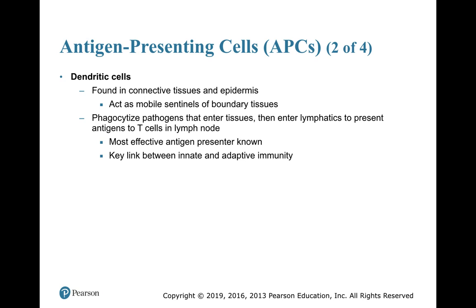Dendritic cells are found in connective tissues and epidermis. They are kind of mobile sentinels of boundary tissues — places where we interact with the outside world. They phagocytize pathogens that enter the tissues, and then they get into the lymphatics and present those to T cells in the lymph nodes. They are the best of the antigen-presenters that we know. They are a key link between innate and adaptive immunity, and there's a lot of evidence that they are very much involved in maintaining immunological memory.